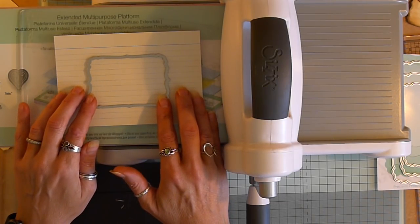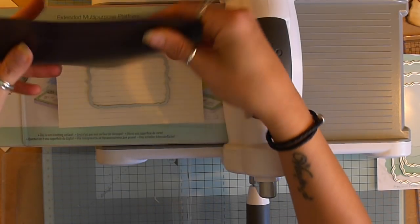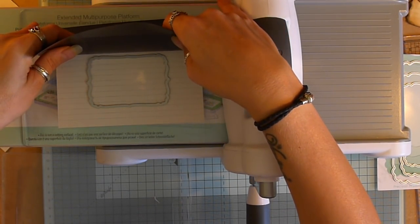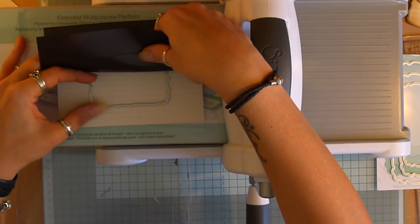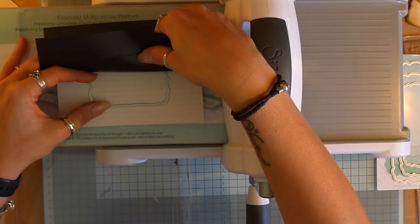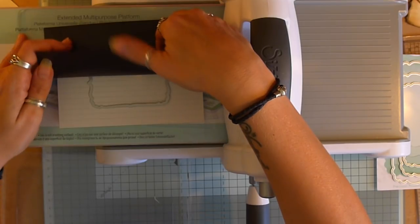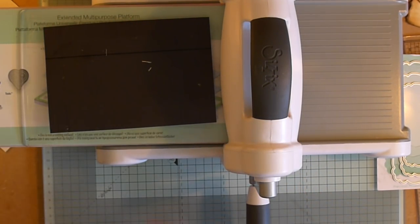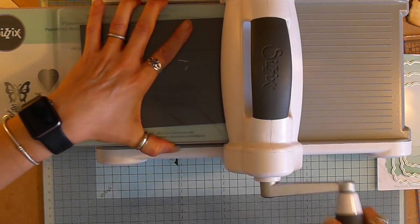So I'm going to line that up where I want it. And then I'm going to take the little magnet flat. I'm not sure if this is how you're supposed to use this but I just gently put this down so I can make sure my die cut is still in the right place. And then I'll put that all the way down. And now I know that shouldn't move. I'll put my top cutting board on. I'm just going to run this through.